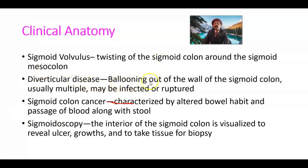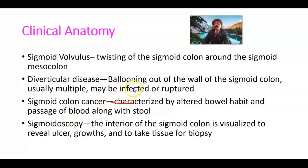Diverticular disease is the ballooning out of the wall of the sigmoid colon, usually multiple, and may be infected or ruptured. It happens between the taeniae coli — usually the antimesenteric and lateral taeniae coli — where the wall balloons out. Congenital diverticula may develop along the mesenteric border but are very rare. Usually it is a disease of older persons, especially Caucasians who eat too much meat with little vegetable, and those who have constipation — it is part of the aging process.